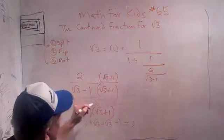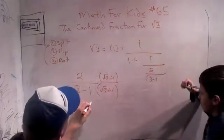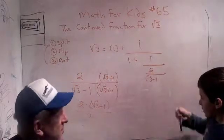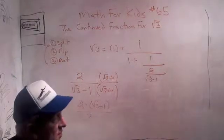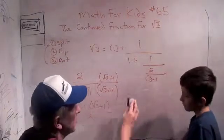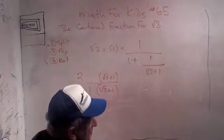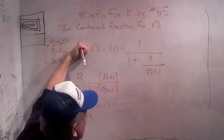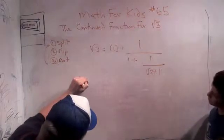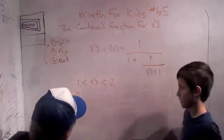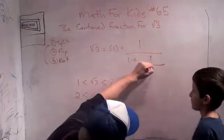The top of this fraction is 2 and the top of the conjugate multiplication is the square root of 3 plus 1. So we get 2 times the square root of 3 plus 1, whole thing divided by 2. But wait — we know about the square root of 3 plus 1 because 1 is less than the square root of 3, which is less than 2, so the square root of 3 plus 1 is between 2 and 3. So we can write this as 2 plus the square root of 3 minus 1.